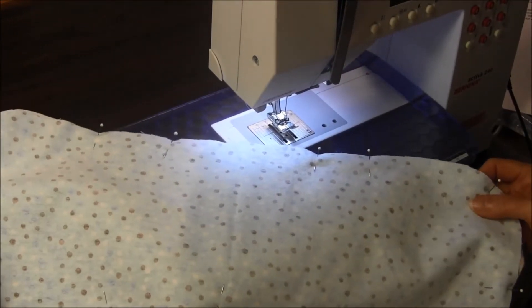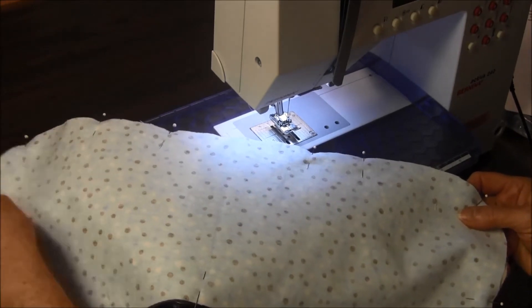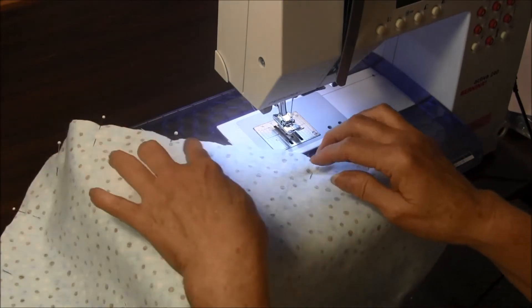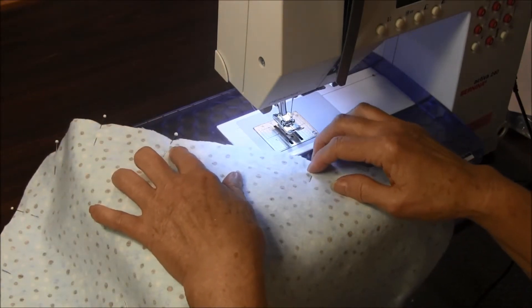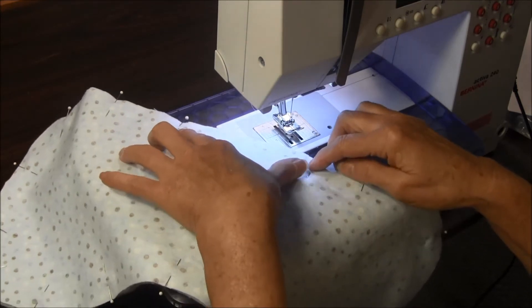As you can see, I have all the layers pinned together. Now we're going to start sewing using a half inch seam allowance, but on the straight edge we're going to leave an opening of about 4 inches for turning.